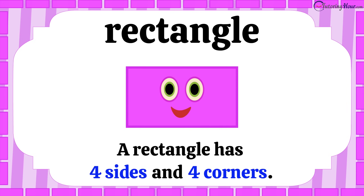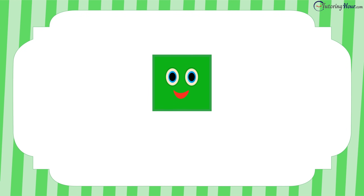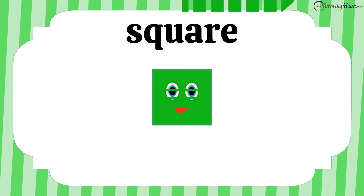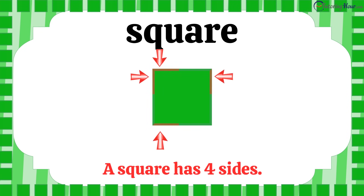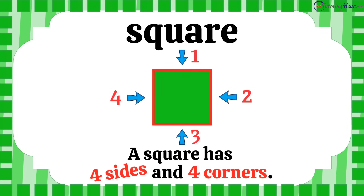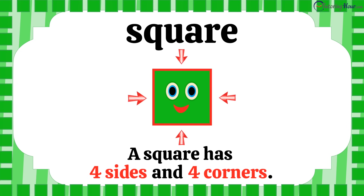A rectangle has four sides and four corners. Our third shape is a square. A square has four sides and four corners. These are the four sides of a square, and these are its four corners. All four sides of a square are equal.